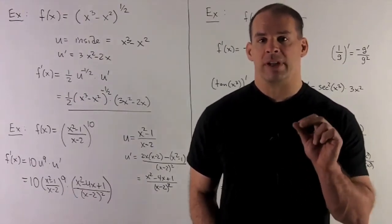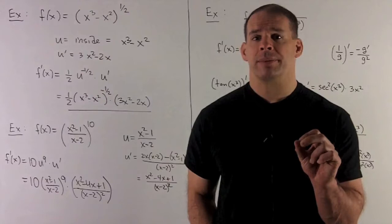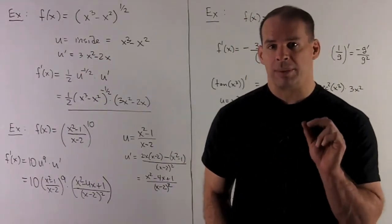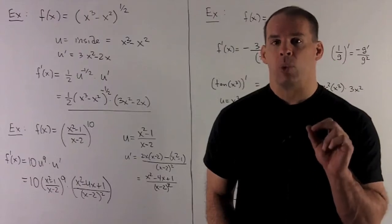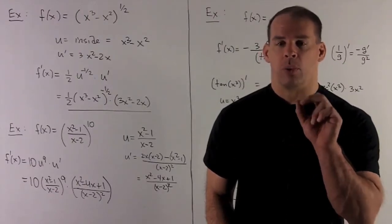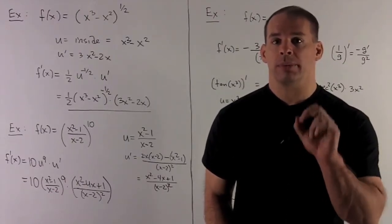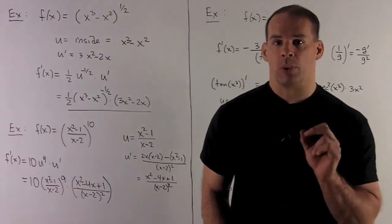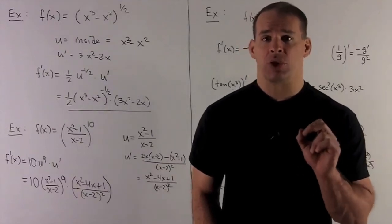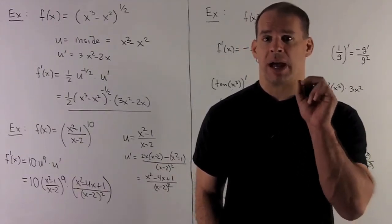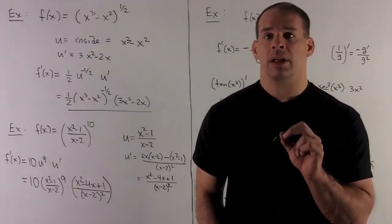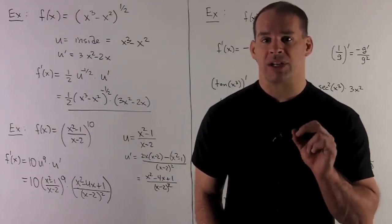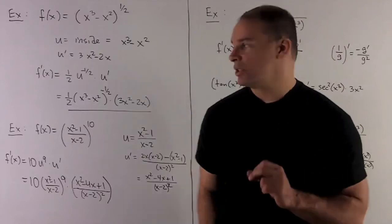What I want is the derivative of u to the one-half times u prime. The derivative of u to the one-half is going to be one-half u raised to the minus one-half. So we put our u back in: one-half times x cubed minus x squared raised to the minus one-half power. Then we multiply by u prime, which is 3x squared minus 2x. That gets me to my answer.